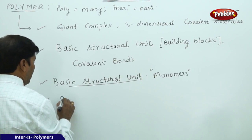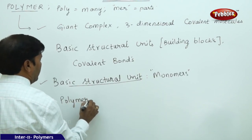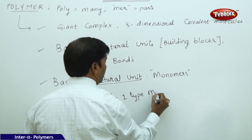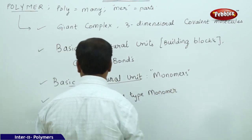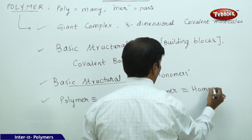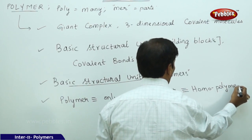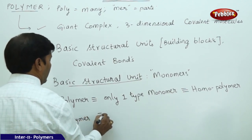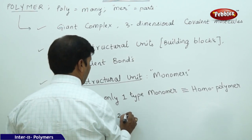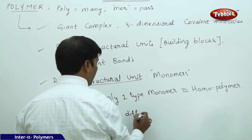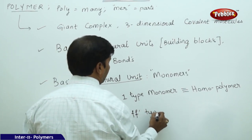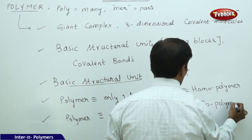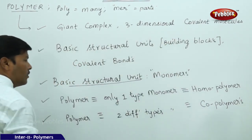A polymer made with only one type of monomer is called a homopolymer. Similarly, a polymer made with two or more different types of monomers is called a copolymer.